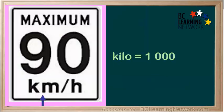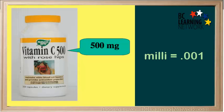We are all familiar with the distance unit of kilometers. Kilo means thousand. Here we have a weight unit of milligrams. Milli means one one-thousandth, or ten to the minus three.